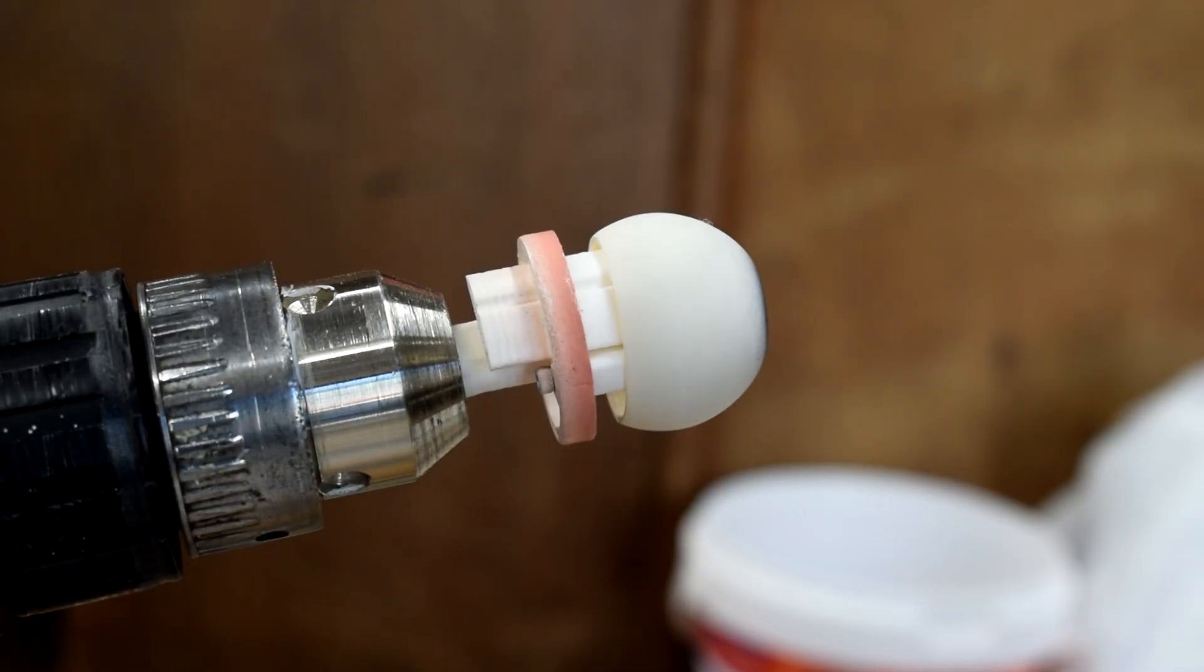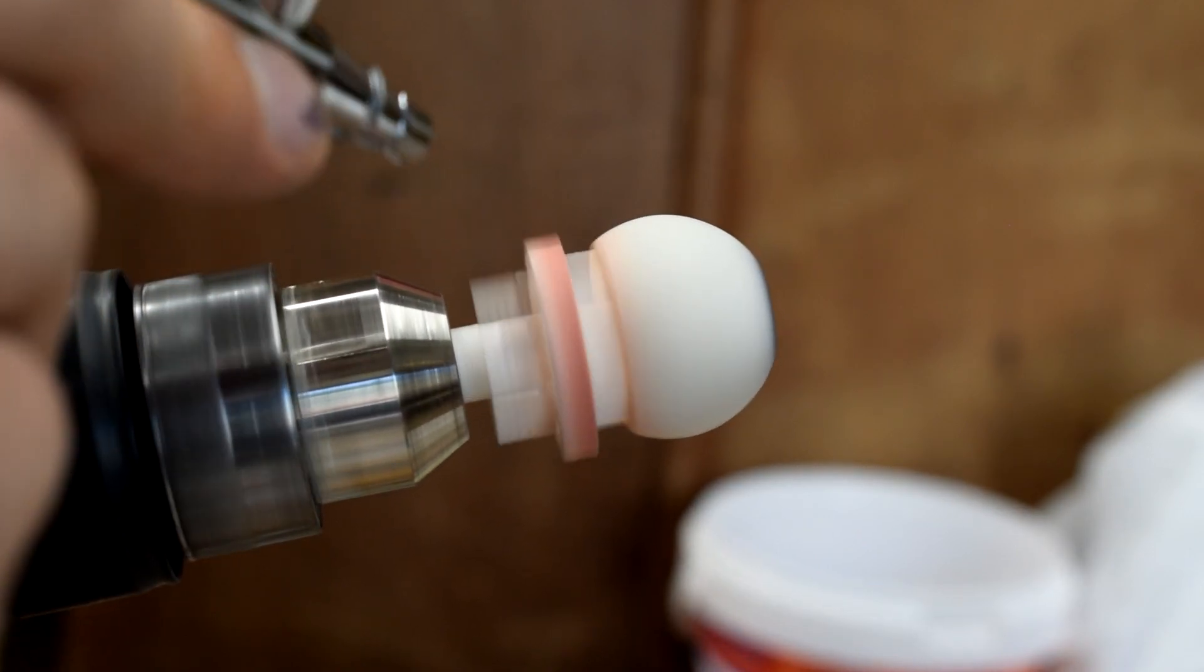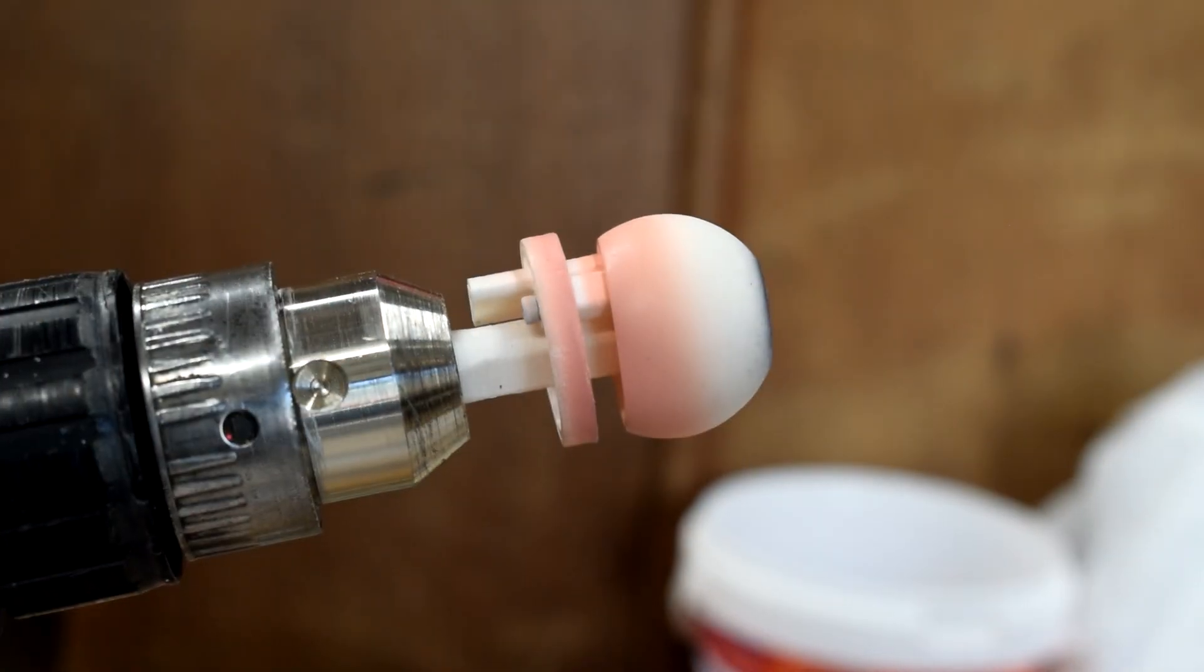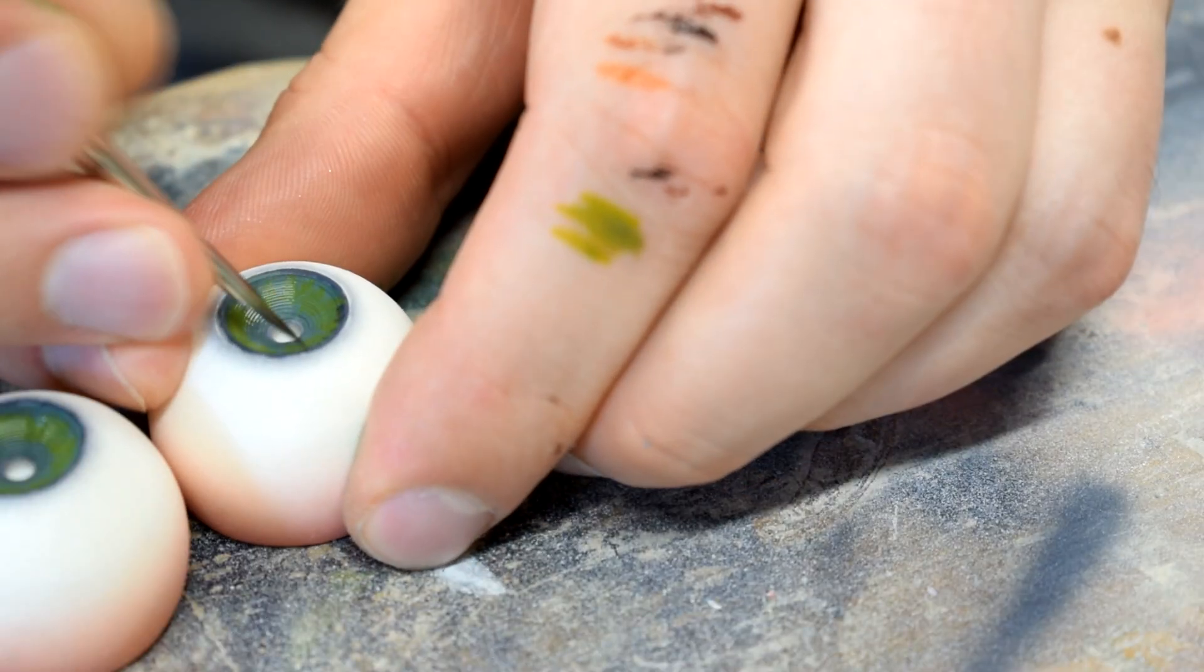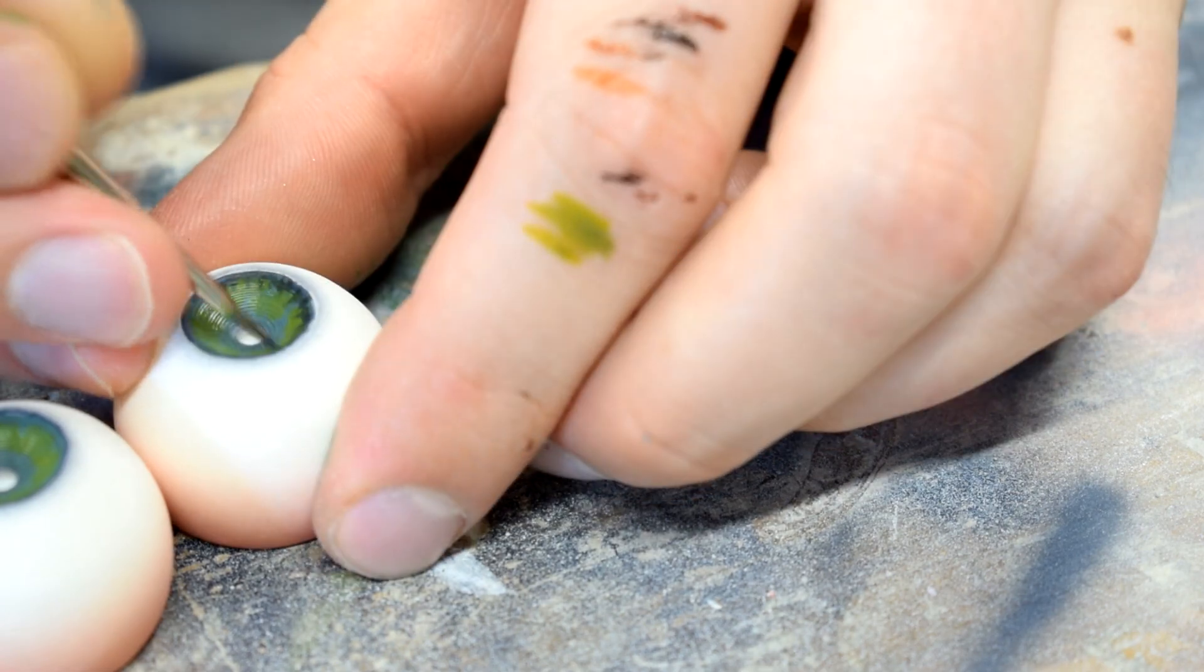Because of the shape of the eye holder you can actually put it in a drill and then you can get a perfectly circular pattern with the paint, so I'd recommend doing that.